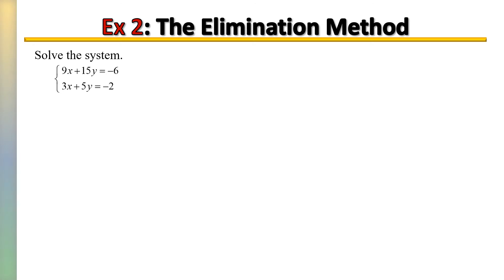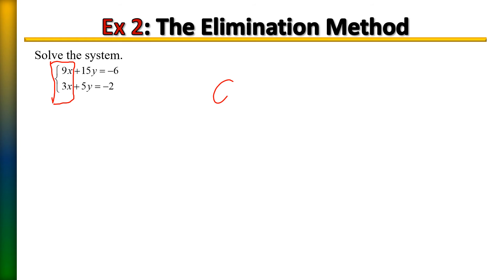Let's do another one. We're going to solve this system by the elimination method. Step one: take a look at your equations and see if there is a variable by itself or one that has a coefficient of one or negative one, because those are easiest to eliminate. Since we don't have that here, we just decide whether to eliminate x or y — we're going to eliminate the x's. So we're looking at the 9x on top and the 3x on the bottom, and we want them to cancel out. Think about what you'd need to do to either equation to make that happen.